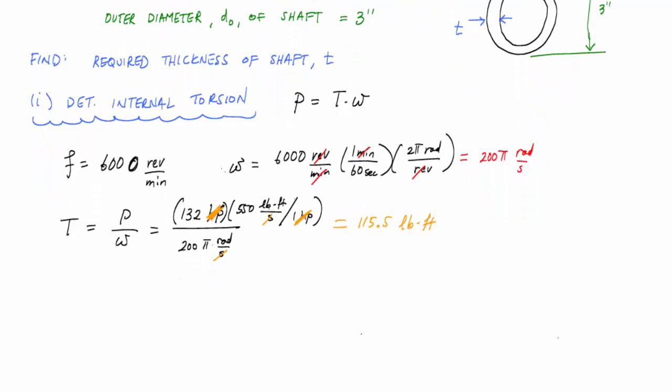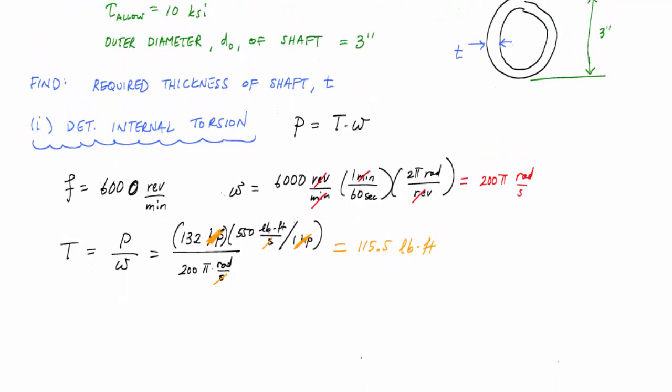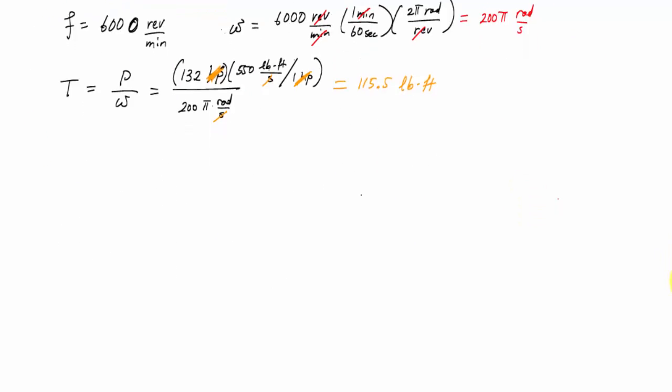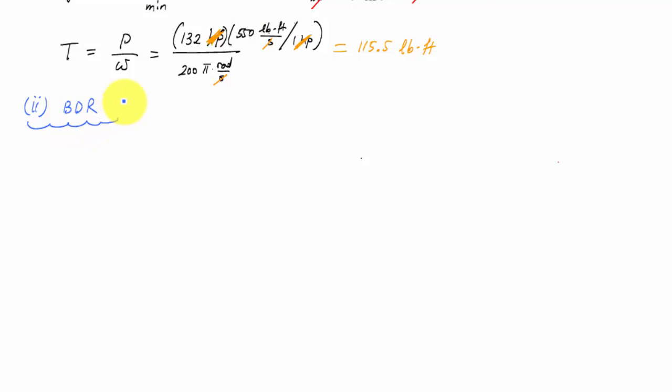Now that we want to design or determine the geometry of something, we want the geometry associated with the shaft. The next thing I'm going to do is apply the basic design relationship. And the BDR, this basic design relationship is only either normal stress or shear stress and torque causes shear stress. So this is going to be tau applied less than or equal to tau allow. This is going to be T times rho over J less than or equal to tau allow.